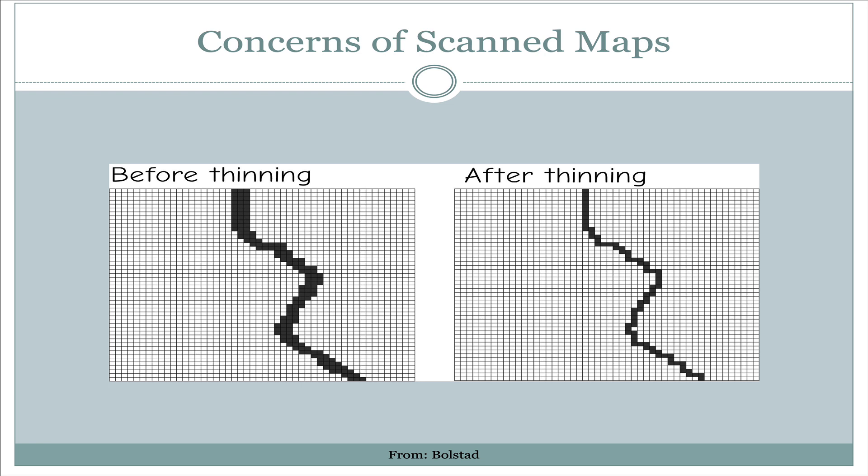So what we can do before we convert from this raster data set into a vector data set is that we can go through a process called thinning. Sometimes it's also called skeletonizing. In this case, what we're going to end up with is a raster line that is one pixel wide or high in every case. This allows us, when we convert from raster to vector, to have a much more precise location for where that vector line is going to be, because we're not starting with a wide area — we're just starting with a series of pixels that are as narrow as possible.